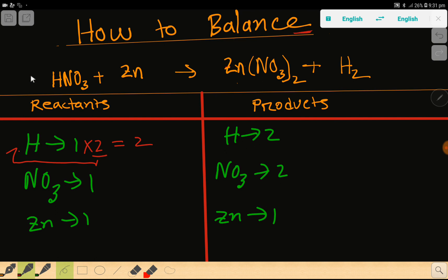So this two will come before this hydrogen, that is here. So we have to place here two as a coefficient. If I place here two as a coefficient, the number of hydrogen will be two and the number of nitrate will be changed, we will get two.